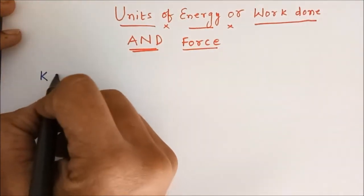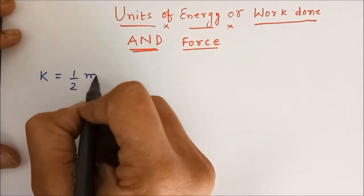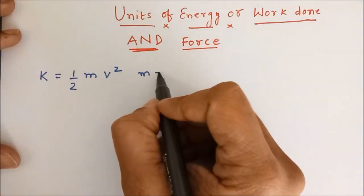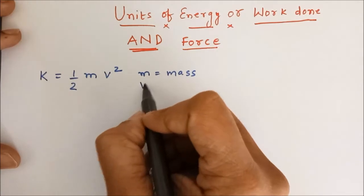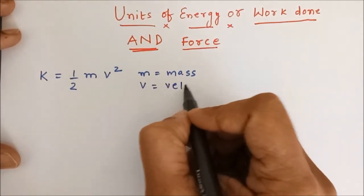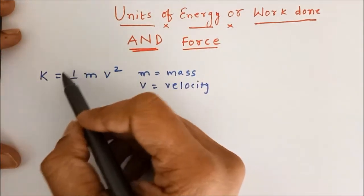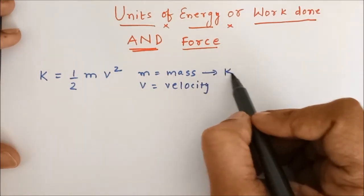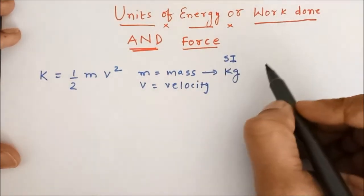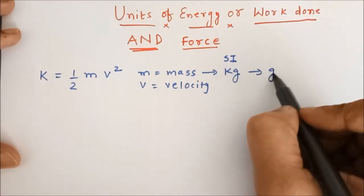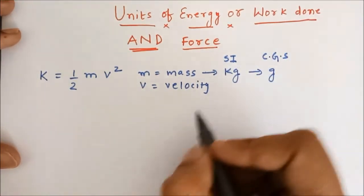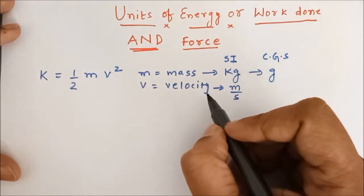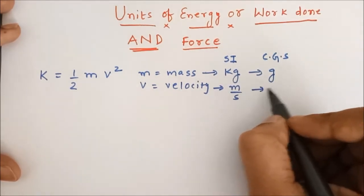Suppose, kinetic energy is given by expression half m v square, where m is the mass of the object, v is the velocity of the object and of course, half is a constant, it does not have any unit. SI unit of mass is kilogram whereas CGS unit of mass is gram. SI unit of velocity or speed is meter per second and CGS unit of velocity or speed is centimeter per second.